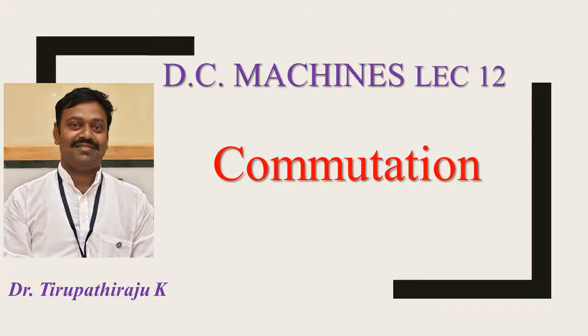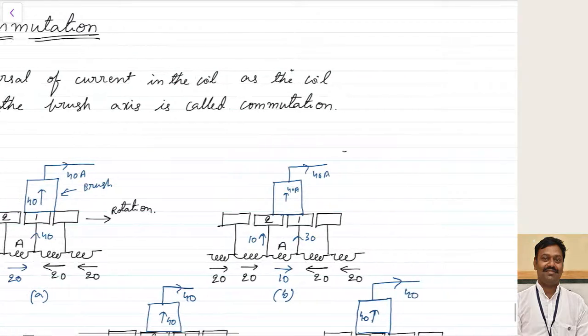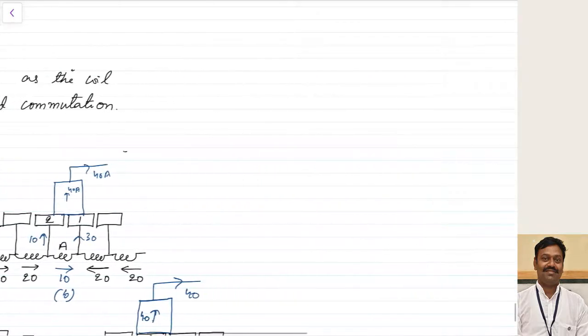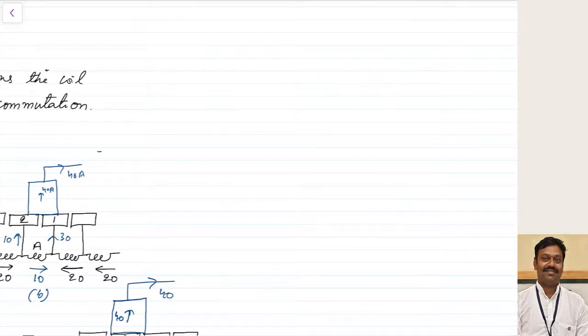Good morning all. Today we are going to discuss about commutation. What is commutation? Commutation is a reversal of a current in a coil as the current passes through the brush axis. So let us see the basics before proceeding to this.